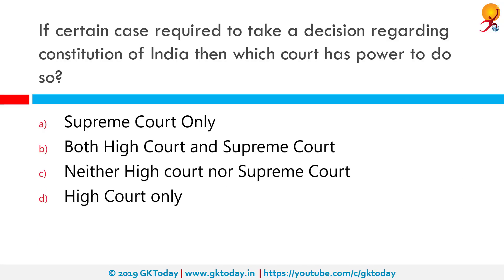If a certain case requires a decision regarding the Constitution of India, which court has the power to do so? Only the Supreme Court of India can take decisions about the Constitution. Parliament, although it passed the 24th Amendment in 1971 to abrogate the Supreme Court ruling in the Golaknath case, amended the Constitution to provide expressly that Parliament has the power to amend any part of the Constitution, including provisions related to fundamental rights. But later it was decreed that Parliament can only pass laws regarding the Constitution which do not amend the basic structure of the Constitution as a whole.